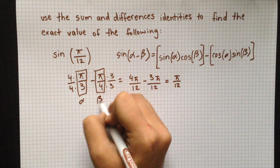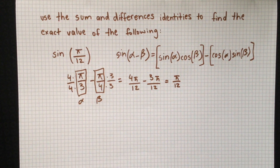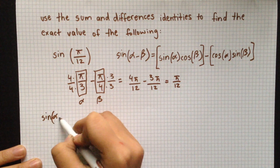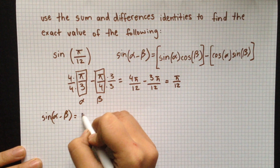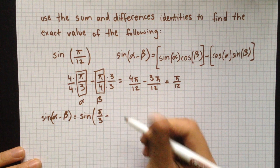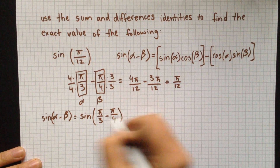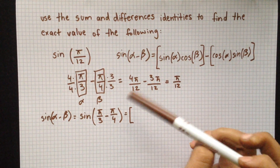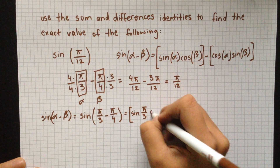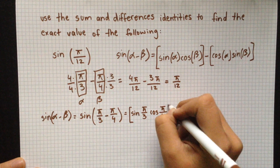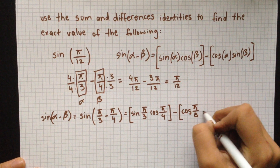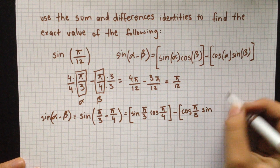I'll say alpha is pi over 3 and beta is pi over 4. Using the difference formula: sine(α - β) = sine(π/3 - π/4), which expands to sine(π/3) times cosine(π/4) minus cosine(π/3) times sine(π/4).